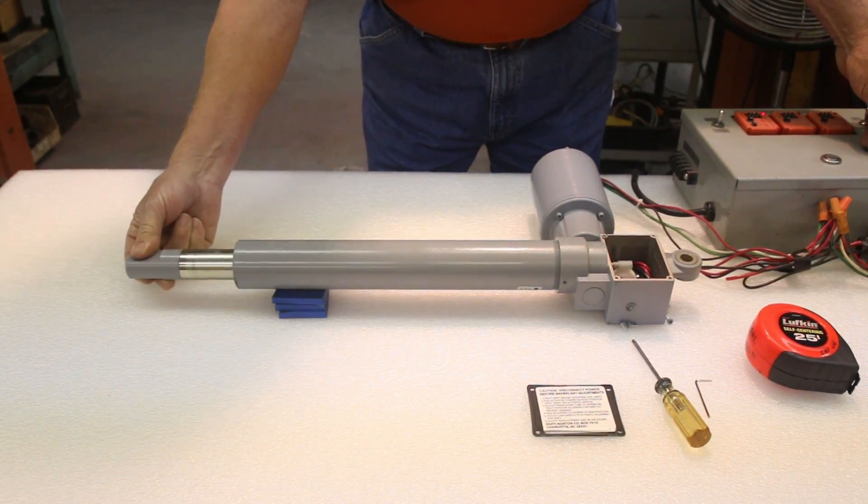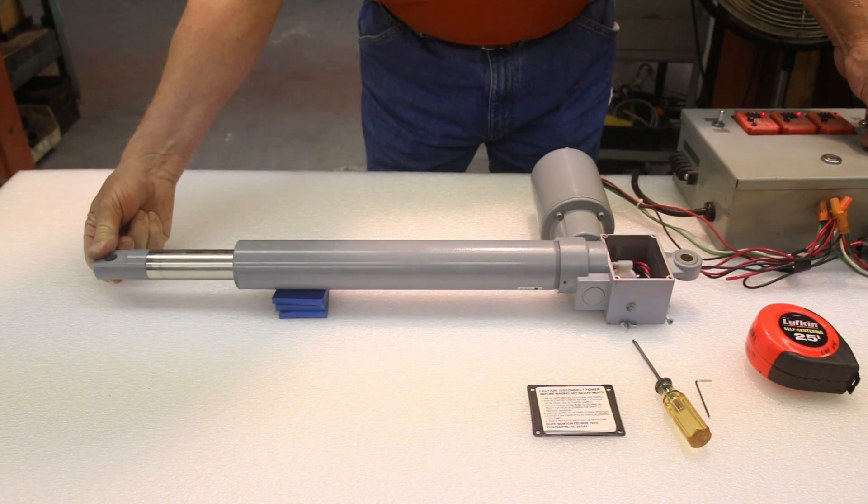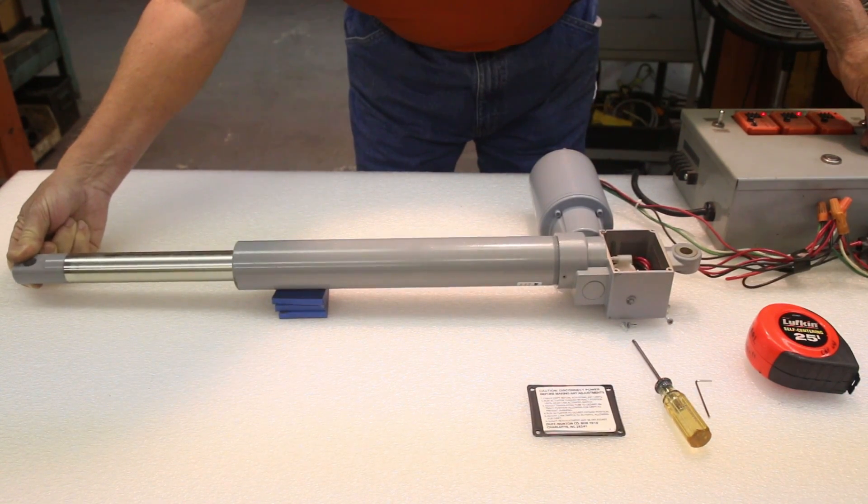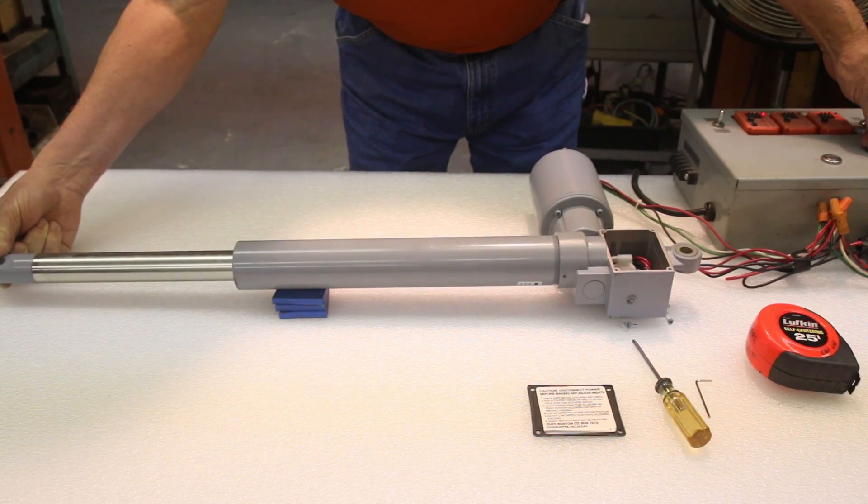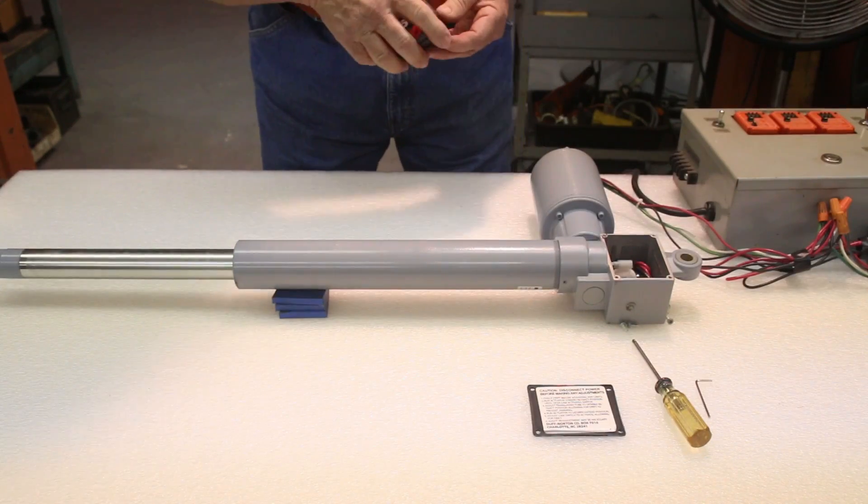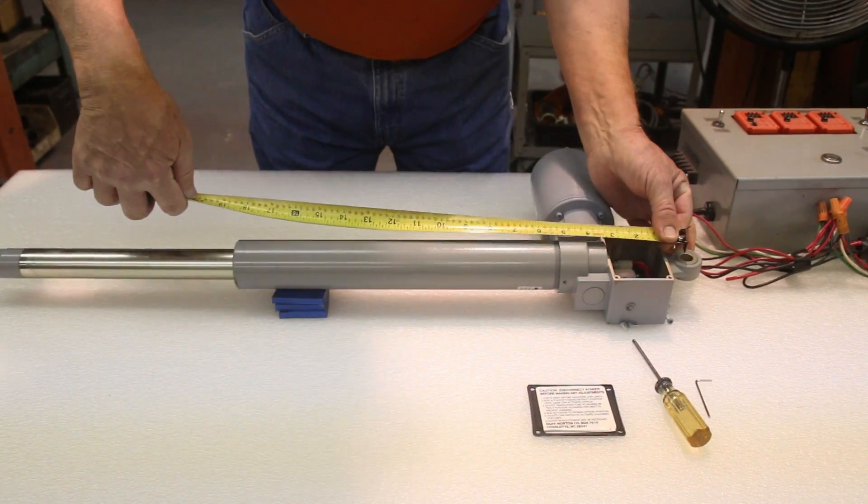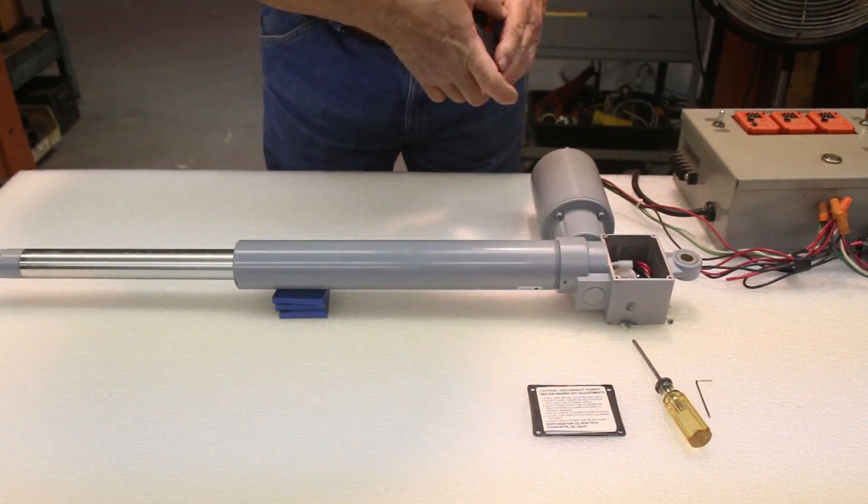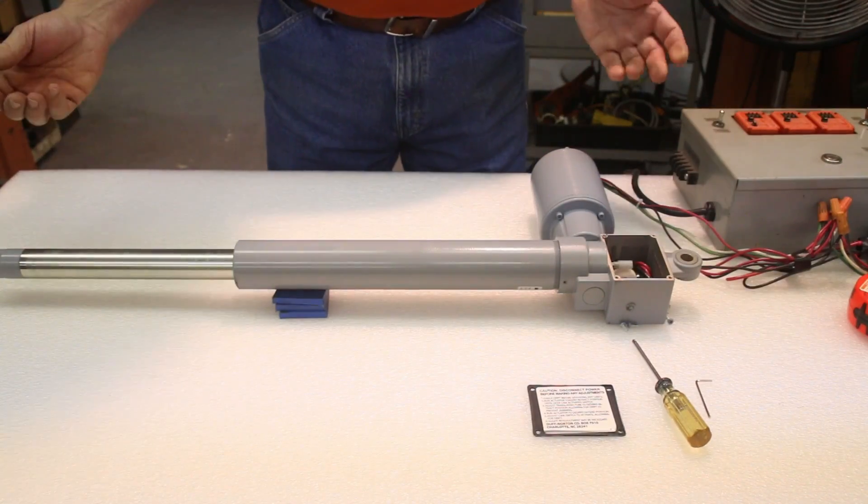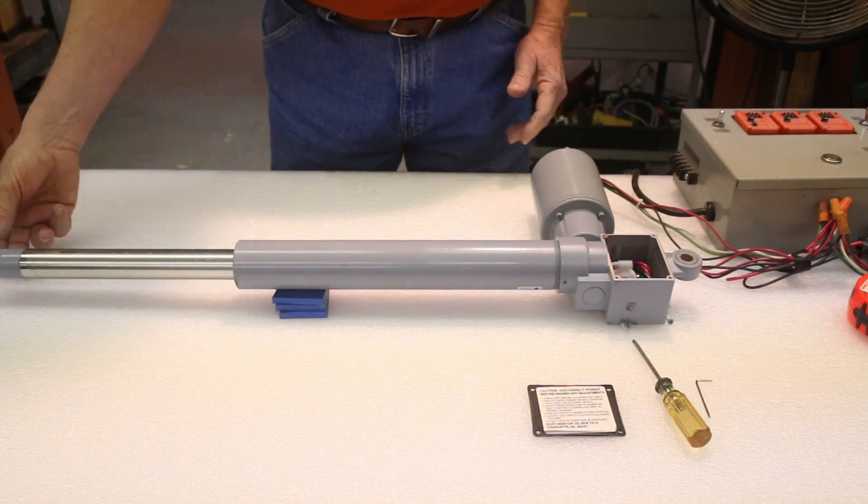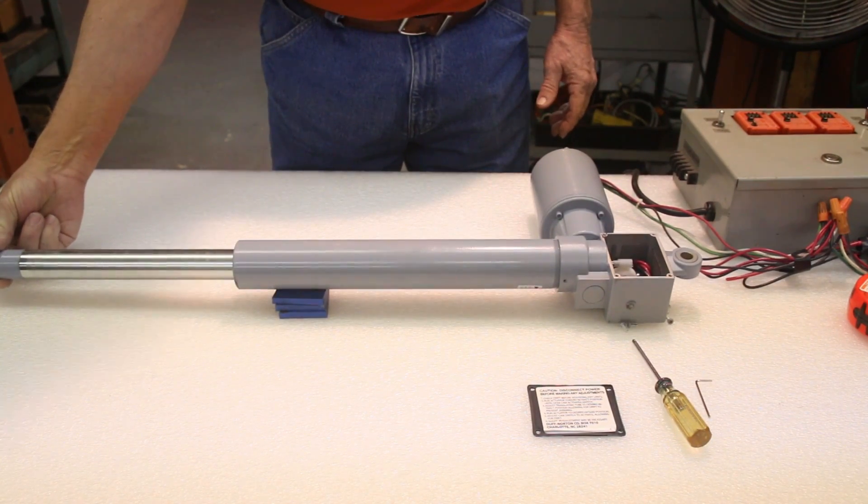We will now extend the actuator to achieve the desired extended height that we want for the stroke of the actuator. This actuator has 12 inches of available stroke, and we'll pick a place to stop here and take a measurement. This is at 29 1⁄4 inches, and you adjust this to satisfy the stroke that you need on your particular application.